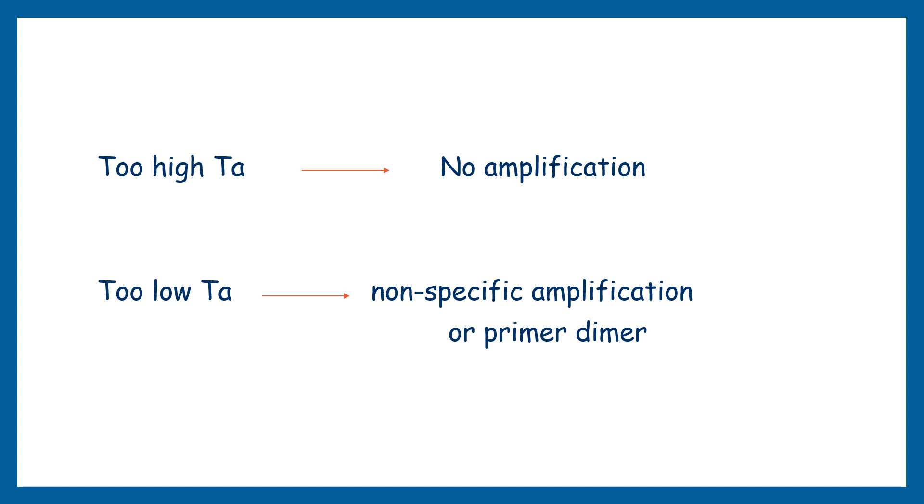To understand this step more accurately, we have to understand what happens during higher and lower annealing temperatures. If we talk about too high annealing temperature, we will get fewer or no amplification. In most cases, a higher annealing temperature leads to no amplification because when the temperature exceeds, primers can't bind with their template.